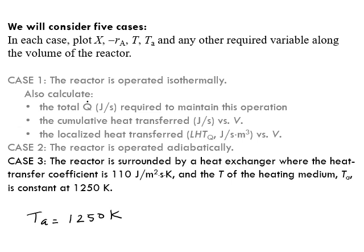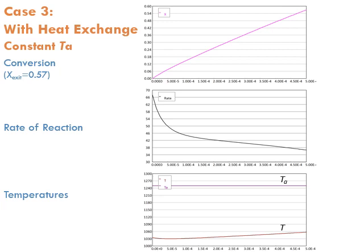Let's see how the solution looks. The conversion has increased from 50% in the isothermal case to 57%. This has to do with the rate of reaction. The isothermal case had the rate starting at around 65–66 and going down to 25 mole per second per cubic meter, but now it still starts at the same value and decreases down to around 35–38 instead of 25 mole per second per cubic meter.